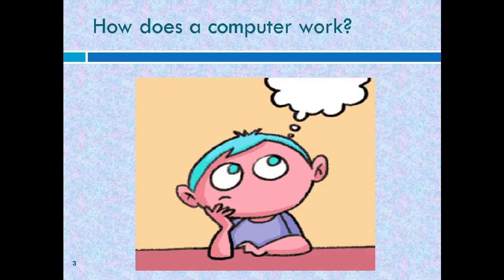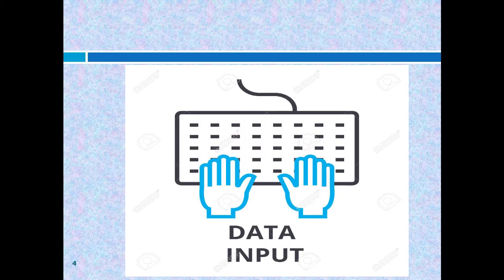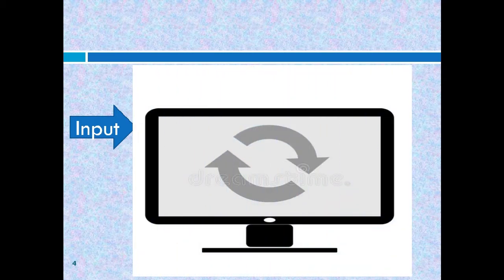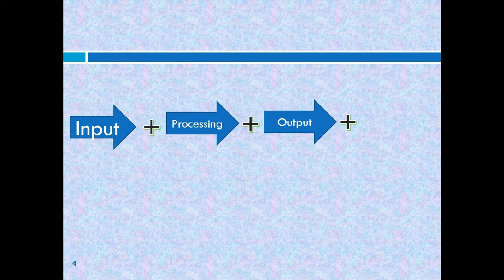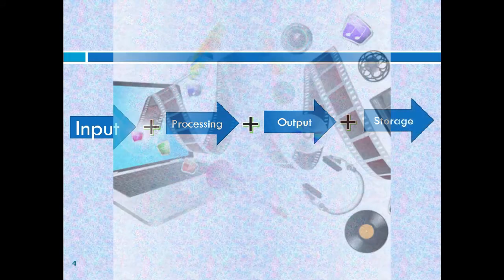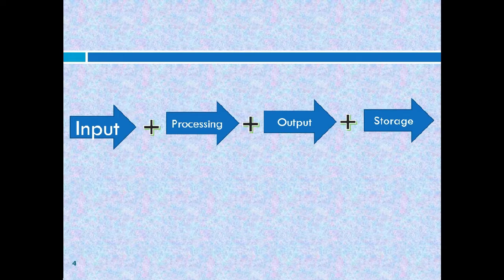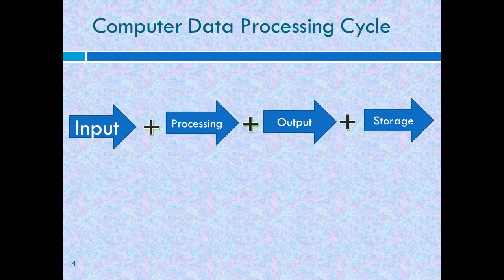How does a computer work? A computer can accept data from the user — these are called input. The computer will work on the data we input; it will process the data. The result of the processing is displayed — this is called output. The place where you store the output is called storage. These are the processing cycle of the computer.